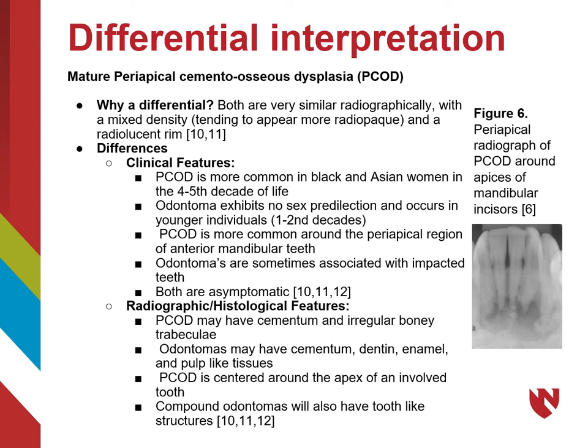Several lesions of the oral cavity may mimic the appearance of an odontoma, and it is important to understand the differences to deliver the right diagnosis. Mature periapical cemento-osseous dysplasia (PCOD) appears similar because of its mixed density and radiolucent rim on a radiograph. However, PCOD is more common in middle-aged African-American and Asian-American females, whereas odontomas occur in younger age groups without a sex predilection. PCOD is also more often found at the apex of mandibular incisors. Histologically, odontomas may have dentin, enamel, and tooth-like structures not seen in PCOD, while PCOD tends to display irregular trabeculae of bone fibers, connective tissue, and cementum.